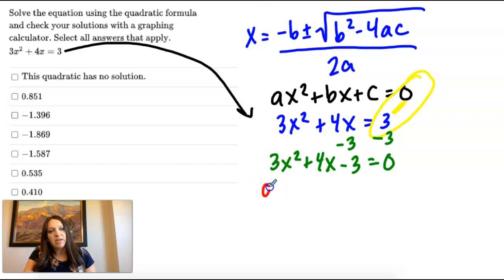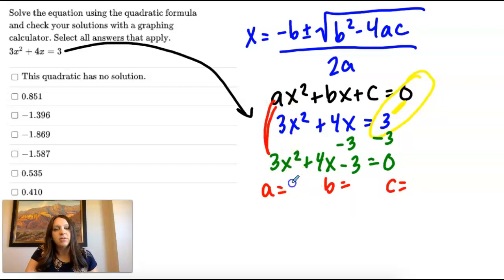Now I'm going to identify a, b, and c. So I can put that in the quadratic formula. So a is the number next to x squared, which is 3.